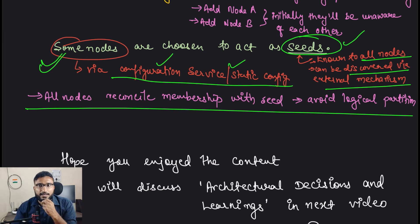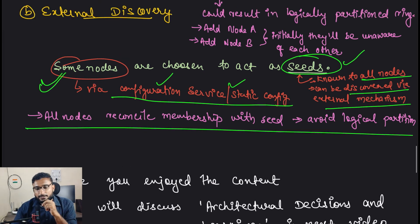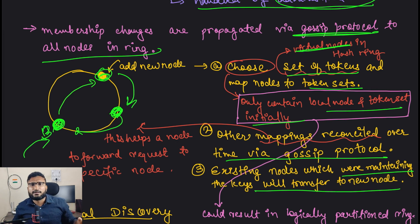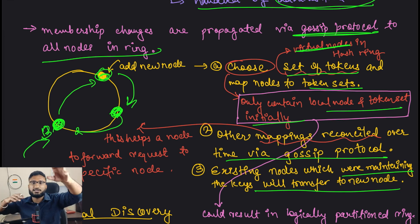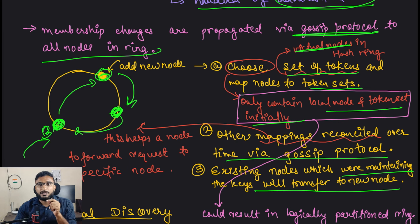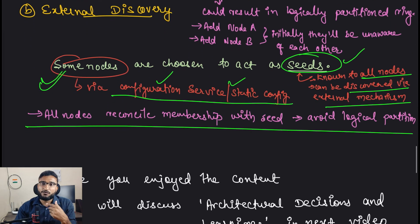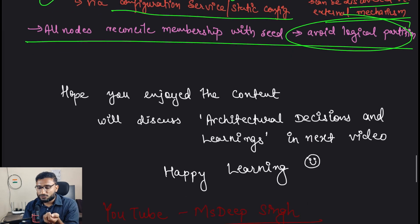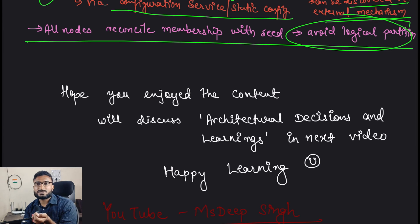A new node goes directly to a seed node to get all the information it needs. Gossip protocol means nodes interact over time, which can take time - a node might gather some information from one node which got it from another, passing piece by piece. But by using seeds, you avoid logical partitions because a new node immediately gets complete membership information. That is all we are discussing in this video.